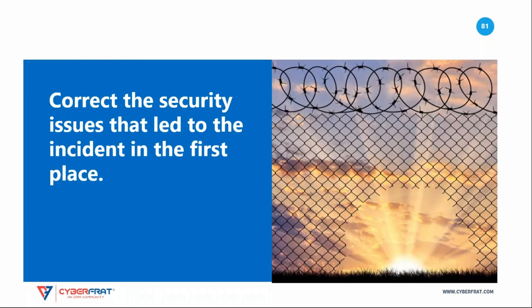When you are rebuilding a system, remember that you may need to build it differently than you did in the past, since that system was compromised. If an attacker compromised the system, you should understand how they did it. If you were missing security patches, apply the patches before bringing the system back online. If user accounts were compromised, make sure they are secured before going live. If you rebuild a system using a pre-attack image, you will likely have the same security vulnerability that allowed the attack to take place in the first place, and you might find yourself repeating the incident response process within hours.